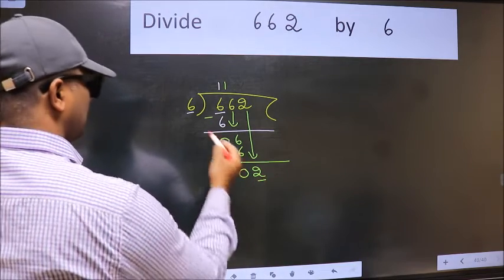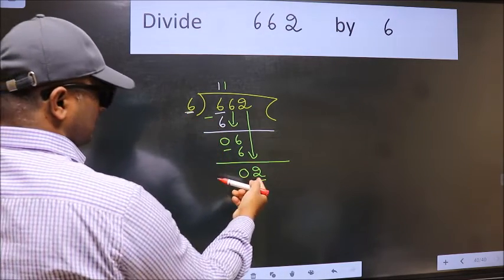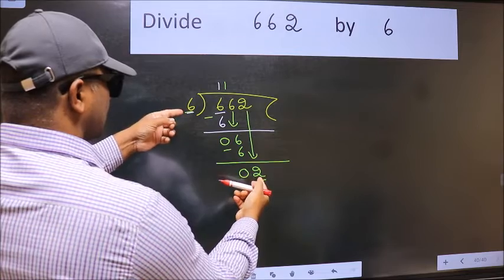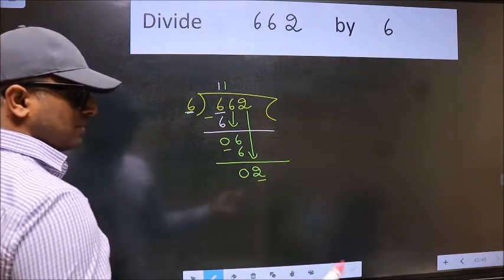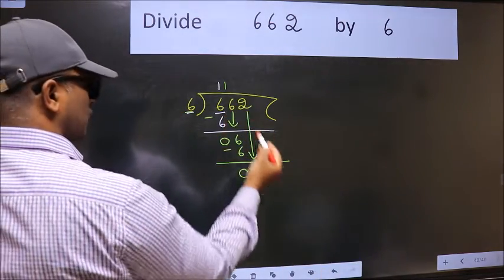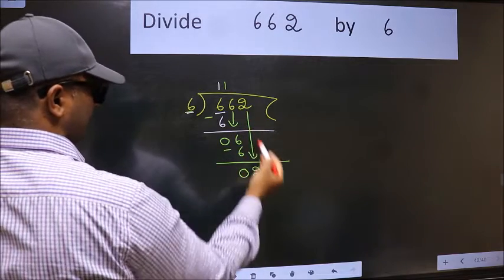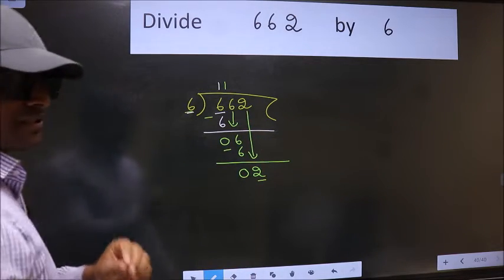Here we have 2 and here 6. 2 is smaller than 6. So what many do is they directly put dot, take 0, which is wrong.